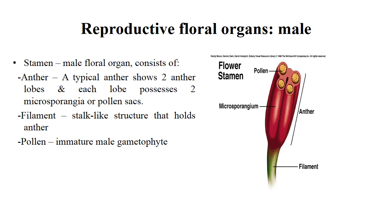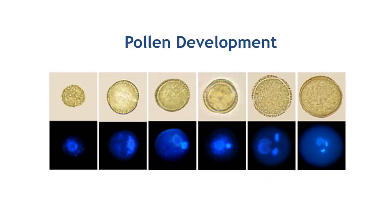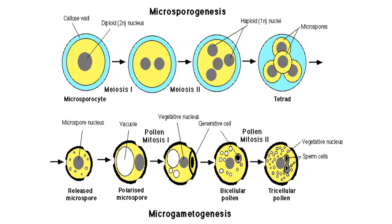The filament is a stalk-like structure whose only function is to hold the anther. Pollen is an immature male gametophyte. The tetrad stage of pollen development is most preferred for haploid generation. This is how microsporogenesis and microgametogenesis occur. The most preferred stage is the tetrad stage, which is obtained in the microsporogenesis process.